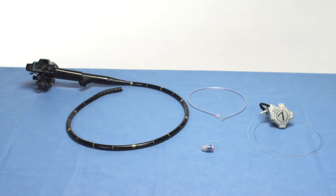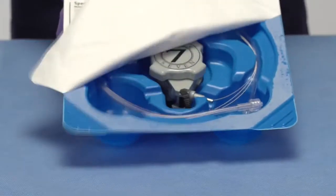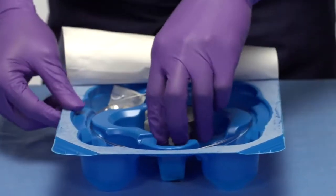The first step will be to attach the handle unit to the endoscope. Remove the device from the package. Pull back the cover and remove the plastic irrigation tubing and the handle unit and tripwire.